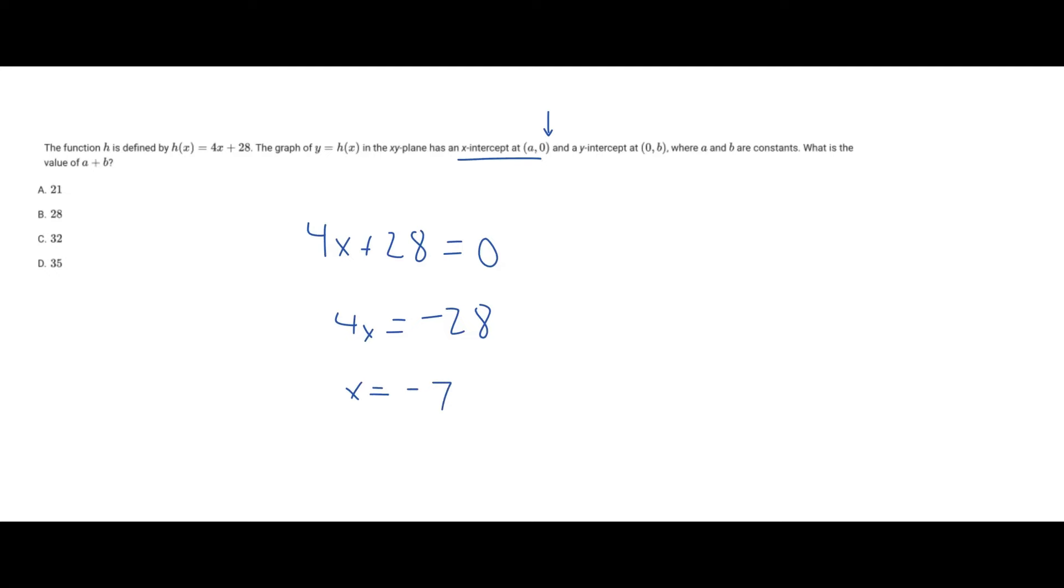Perfect. We found the x-coordinate of our x-intercept, and now we want to find the y-coordinate of our y-intercept. For this part, it's pretty much the same thing but reversed. We want to find the y output when x is equivalent to 0.